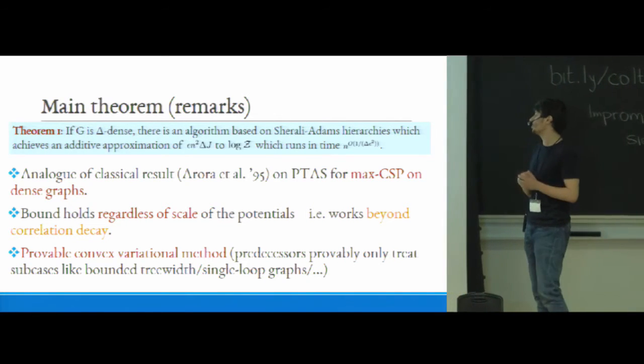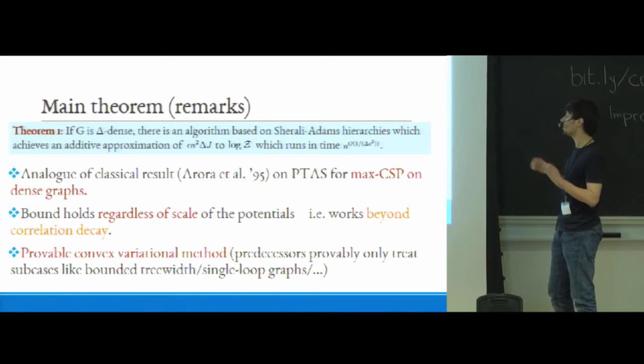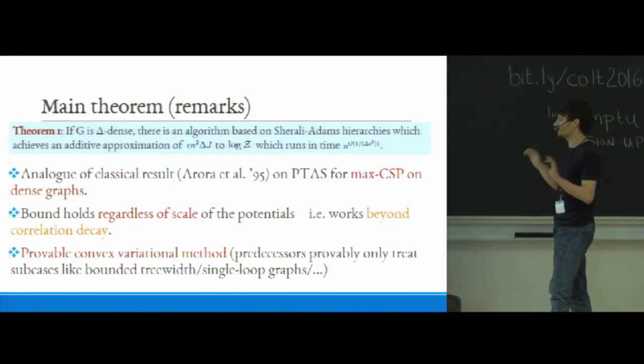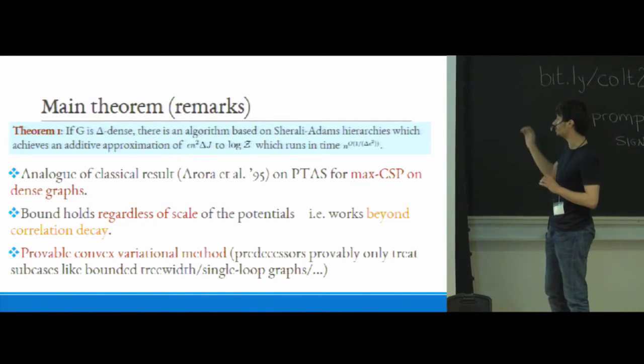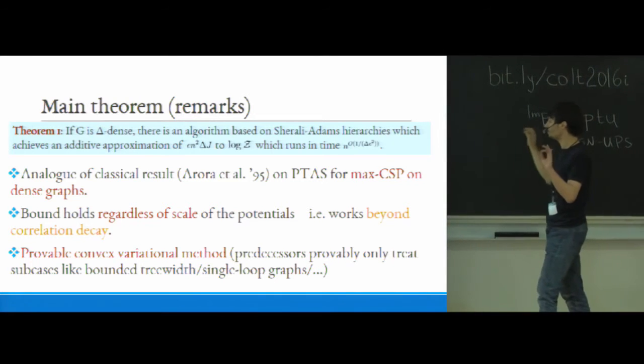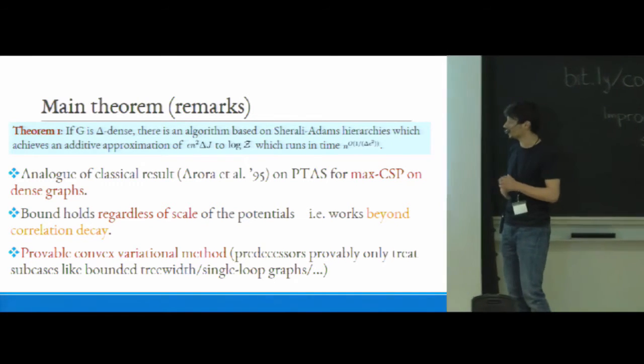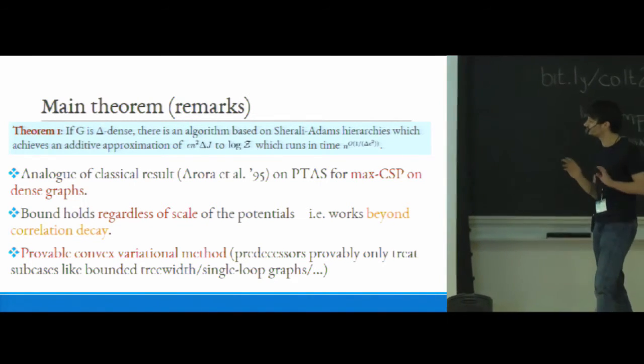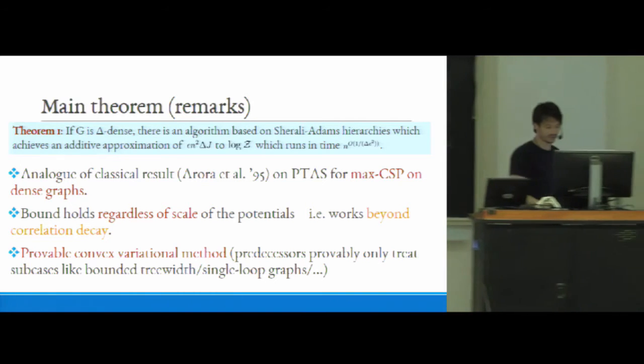And third, as far as I know, basically this is the only way I know how to show that any convex variational method gives anything provable beyond sort of some semi-trivial instances like again bounded tree-width graphs, graphs with a single loop, or sort of some kind of silly instances basically.